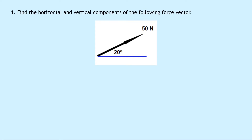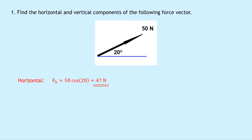Question one says to find the horizontal and vertical components of the following force vector. We've got a resultant force of 50 newtons at an angle of 20 degrees to the horizontal. To find the horizontal component, remember we're going to use cosine — cos goes across. So we've got FH equals 50 cos 20, which gives 47 newtons. For the vertical, FV equals 50 sine 20, which equals 17 newtons.